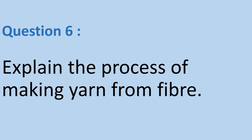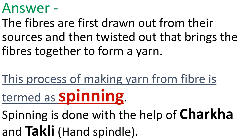We have reached the last question. Question number 6. Explain the process of making yarn from fiber. Answer: The fibers are first drawn out from their sources and then twisted together, which brings the fibers together to form a yarn. The process of making yarn from fiber is termed as spinning. Spinning is done with the help of devices like charkha and takli, commonly known as hand spindle.